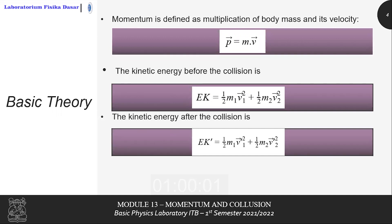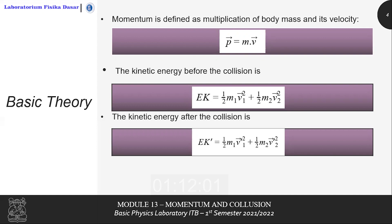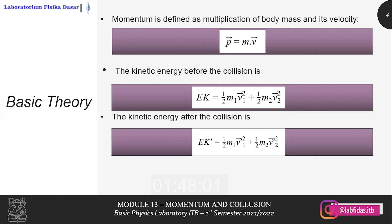In Module 13 we will use two equations: the momentum equation and the kinetic energy equation. Momentum is defined as the product of mass and velocity, written as p equals m times v. Kinetic energy can be calculated by the equation: one-half times m times v squared. Because in this experiment we review a system consisting of two carts, the kinetic energy of the system is the sum of the kinetic energy of each cart: one-half m1 v1 squared plus one-half m2 v2 squared.